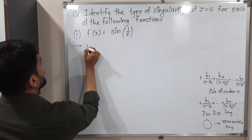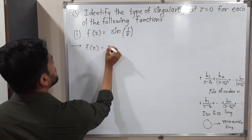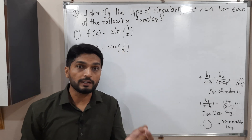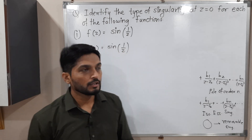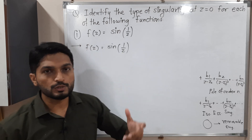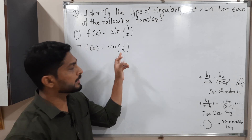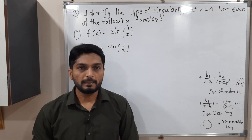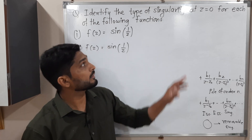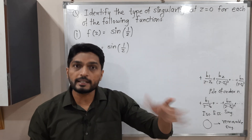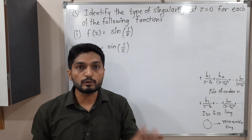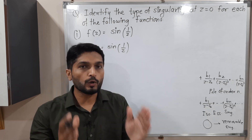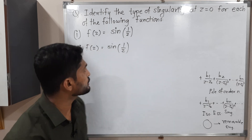Let me write the function: f(z) = sin(1/z). The first step is to find a point where the function is not analytic. You can easily see Z is equal to 0 — if I put 0 here, the denominator will be 0. So Z is equal to 0 is a singular point. Since they have already mentioned Z is equal to 0 is a singular point, we simply have to find its type. So I will focus on its Laurent expansion.